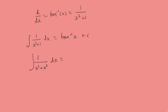Here it's important when we're doing this general form with a squared, when you see this you need to take the square root of a because it's going to be 1 over a, the inverse tan of x over a plus c.